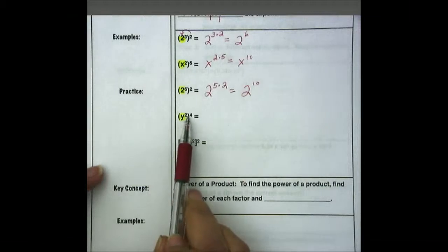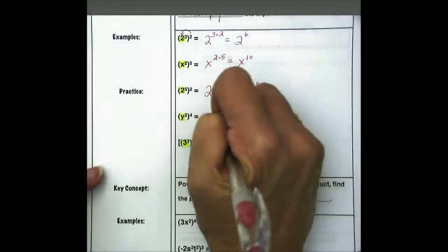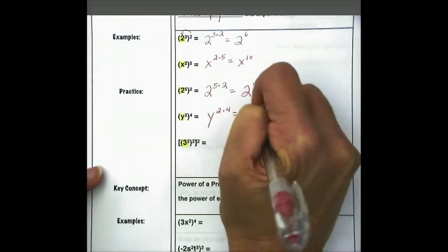The next one says y to the 2nd raised to the 4th. So our base stays the same. 2 times 4 equals y to the 8th power.